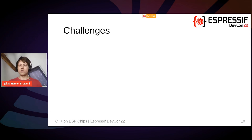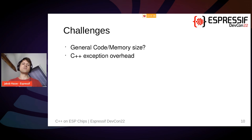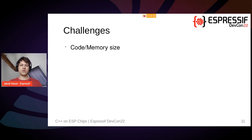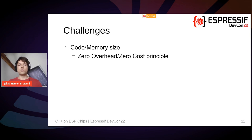Let's take a look at the challenges. I will first briefly talk about the general code and memory size of C++, then talk about C++ exceptions in particular, and finally mention some incompatibilities between C and C++. In general, C++ is built around the zero-overhead principle: if you do not use a feature, you will not pay for it in terms of code or memory size. If you do use a feature, it is implemented in the most efficient way already — you should not be able to implement the same feature more efficiently in C or assembly.